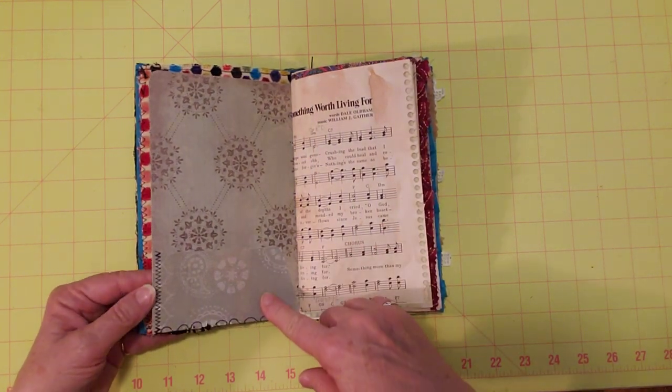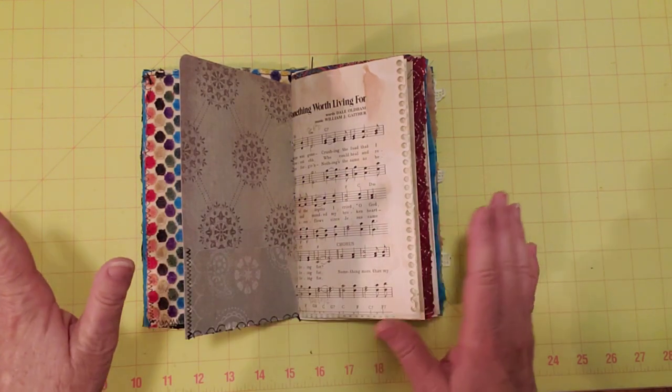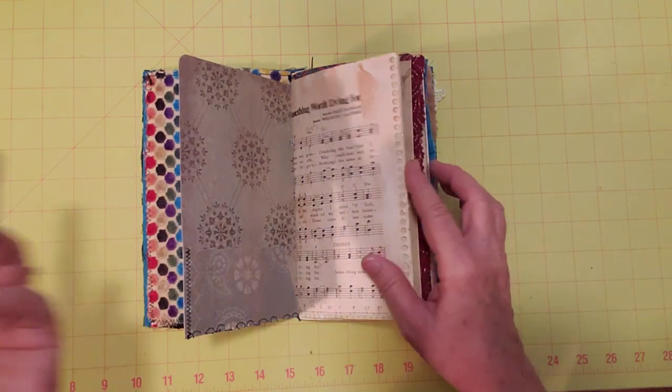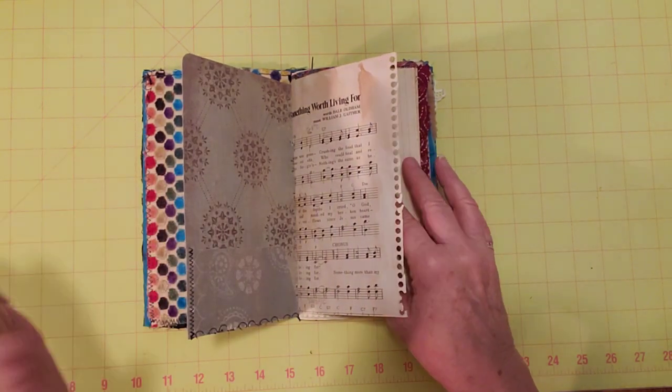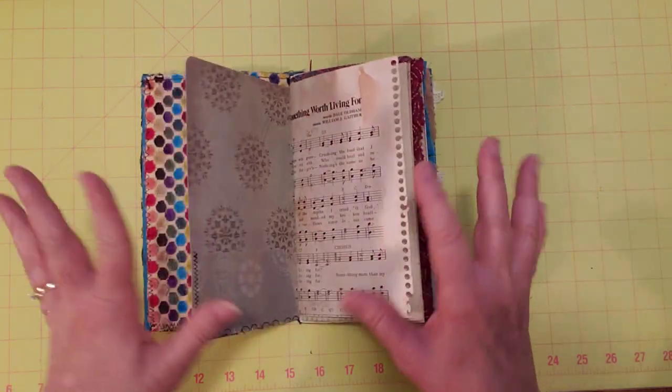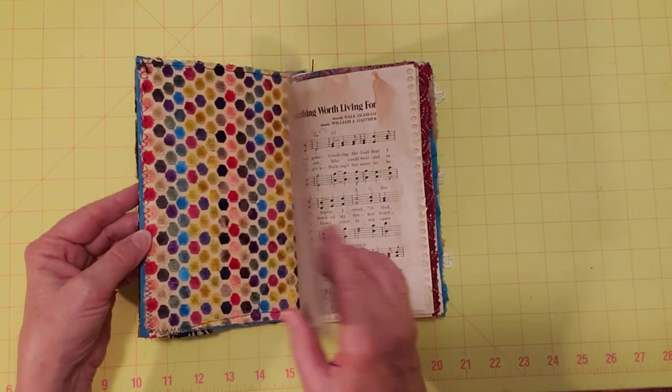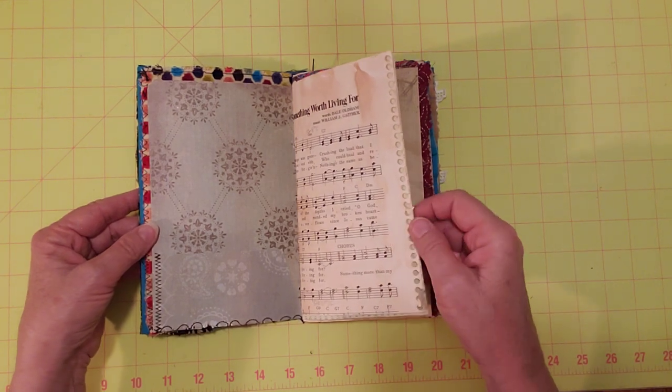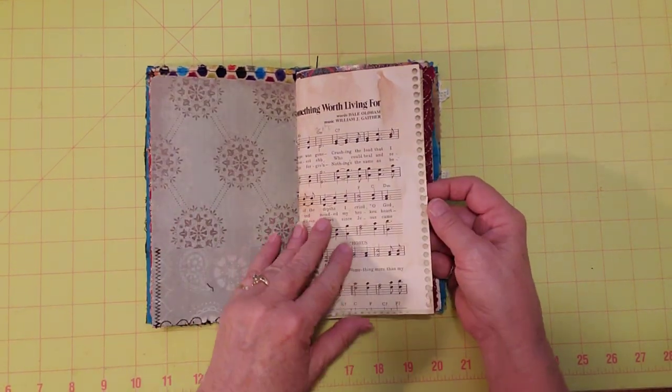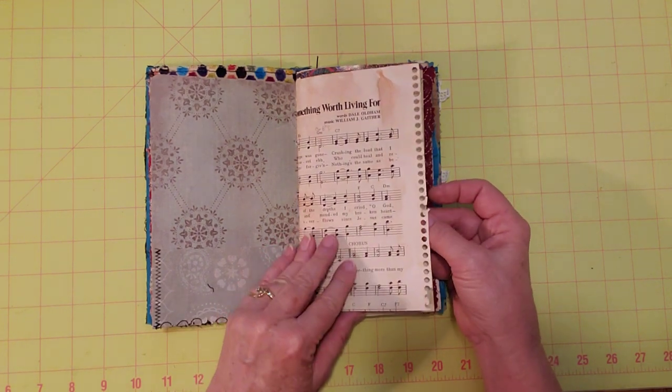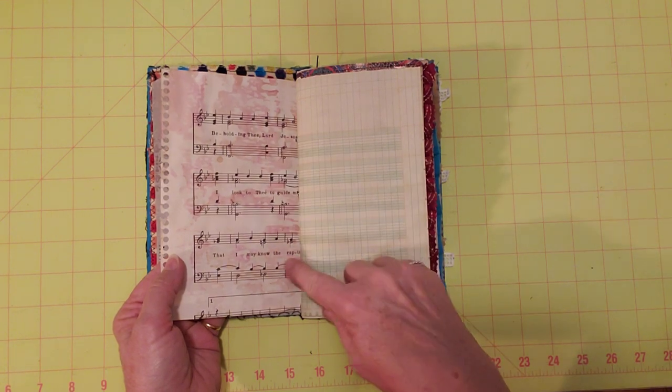So I went ahead and added pockets as I was putting in papers and things. I added pockets and tuck spots. And so next week we're decorating or embellishing, adding ephemera. So I tried to stay away from that, although I added a couple of ruffles. And you'll see those as we go through. So scrapbook paper and I've got some, this is avocado dyed. I believe it's avocado dyed. And oh, it's got some written dye on it too. Some music paper.